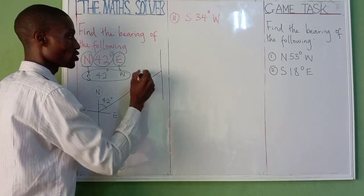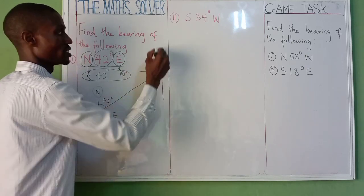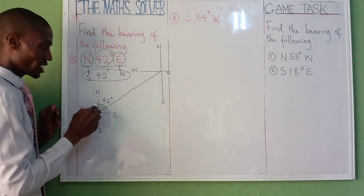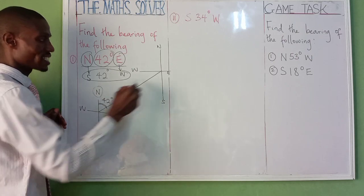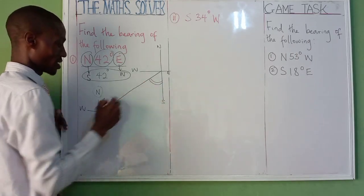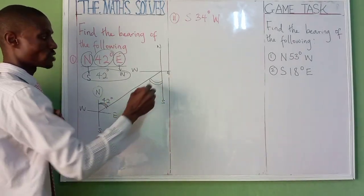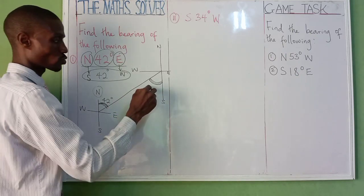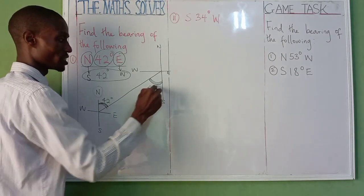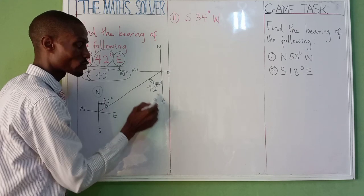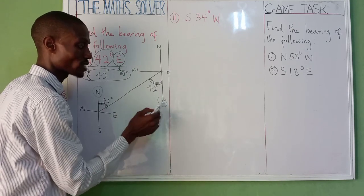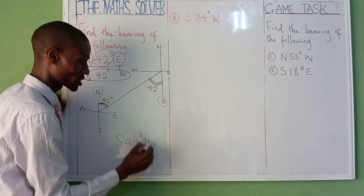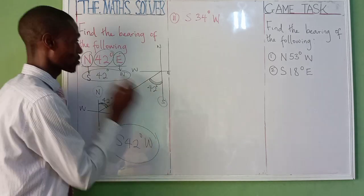Now draw a second quadrant with north, east, south, and west. As the first angle of 42 degrees is up here, it will be alternate to the one below — like a Z-angle. So this one is also 42 degrees. The south is serving here, so your answer is south 42 degree west, because it's in between south and west.